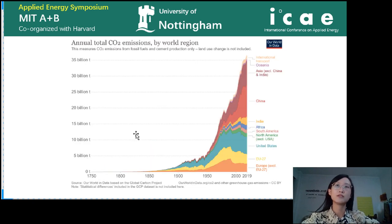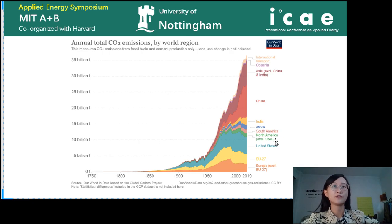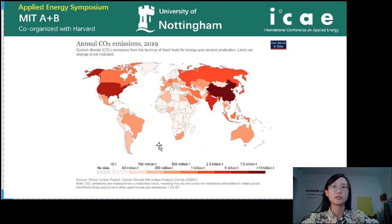Here shows the annual total carbon dioxide emissions by different world regions. Before the 1950s, the United States and Europe accounted for more than 85% of emissions each year. But in recent decades, it has changed significantly. We can see a significant rise in carbon dioxide emissions in China, and this picture clearly shows that the amount of carbon dioxide emitted in China is very large. So we need to do something to reduce the carbon dioxide concentration.